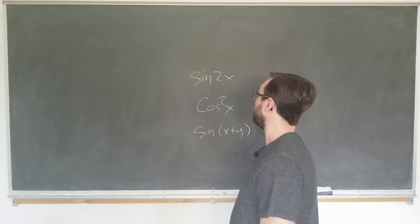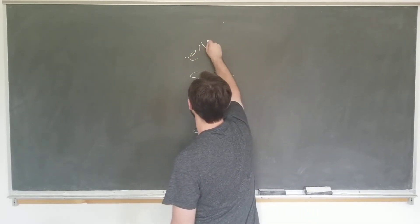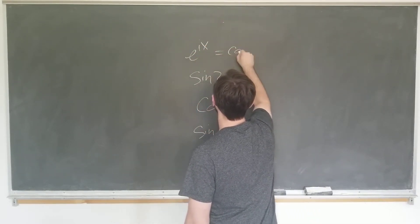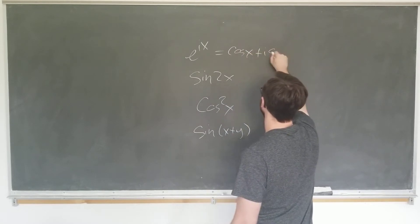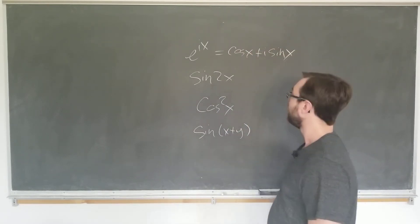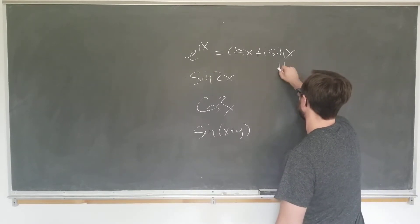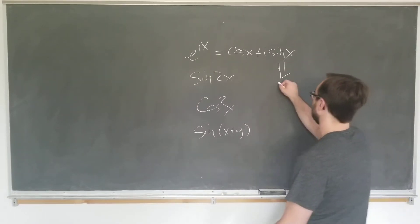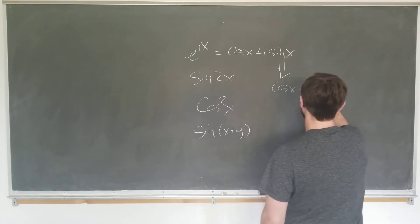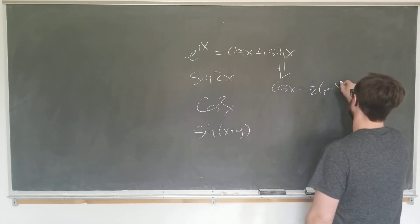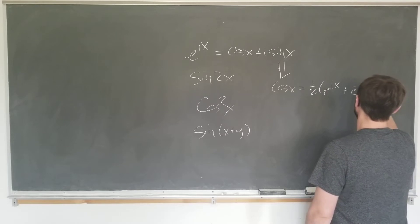Of course, it's going to rely on Euler's identity. E to the ix is equal to cosine x plus i sine x. And you can also show that this tells you, if you add and subtract it, that cosine x is equal to one-half e to the ix plus e to the minus ix.